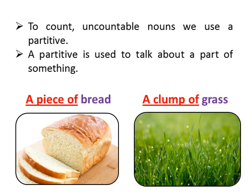To count uncountable nouns, we use a partitive. A partitive is used to talk about a part of something. For example, we say a piece of bread. Here, a piece of is a partitive.